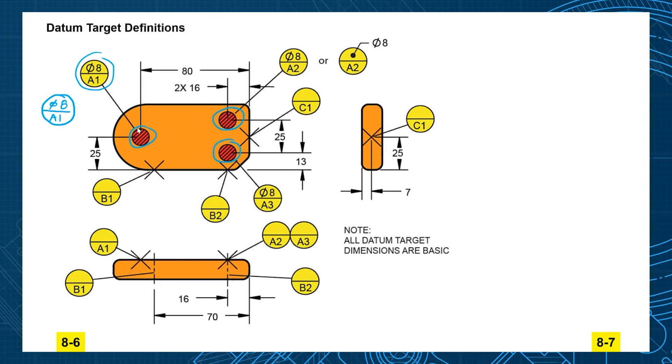Alright, so we got three for A, we need two for B. So here is our B1. It's shown as an X in this view and notice how B1 is shown as a line in this view. So that would be a line contact making contact with the edge of a pin. We have two of those, so B1 and B2 here. So that creates a perpendicular plane.